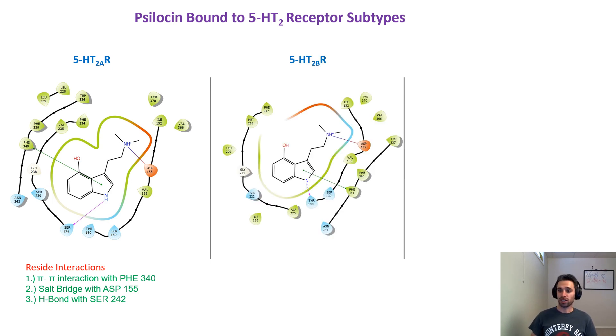This is serotonin 2B receptor, and we've got psilocin inside of there, and we can actually see some of the interactions are very much the same. They're just in different positions. For example, the first residue interaction is the pi-pi interaction with phenylalanine 341. So between 2A and 2B, it's the same phenylalanine, just in a different position, a slightly different position in the receptor.